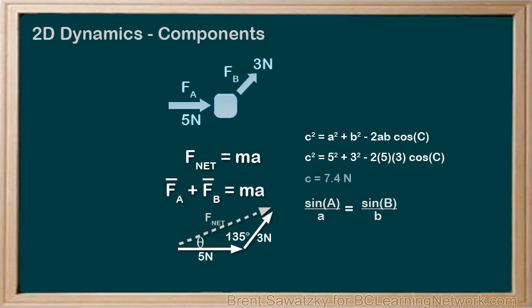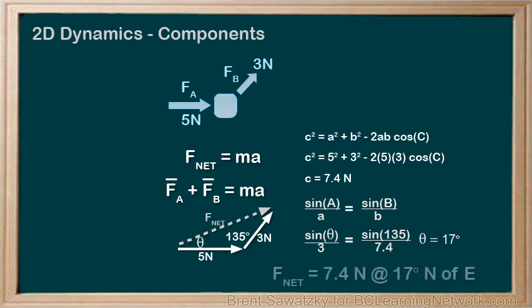And the sine law can be used to determine the direction of the F net. In this case, the net force would be 7.4 newtons at 17 degrees north of east.